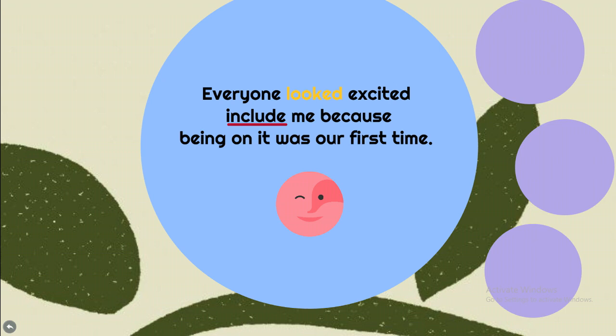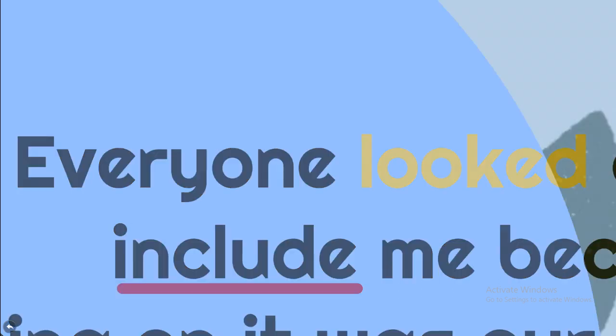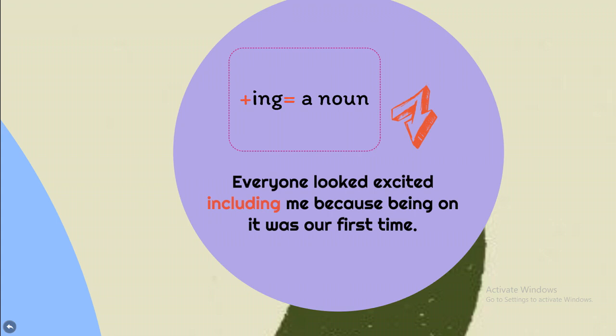The two main verbs are 'look' and 'include.' So we have to change 'include' to a noun form by adding '-ing,' because 'look' is already the main verb of this sentence.